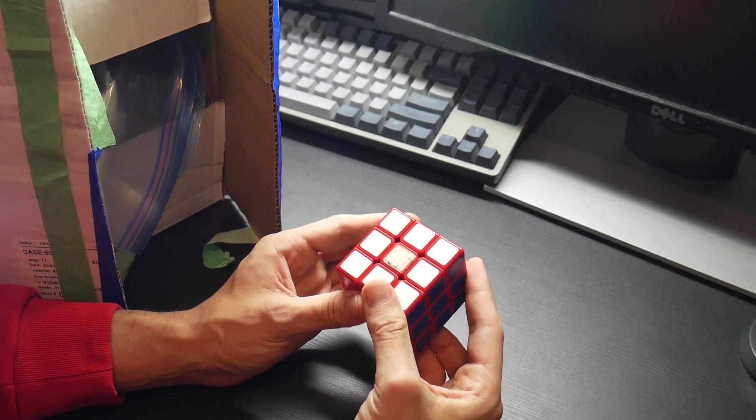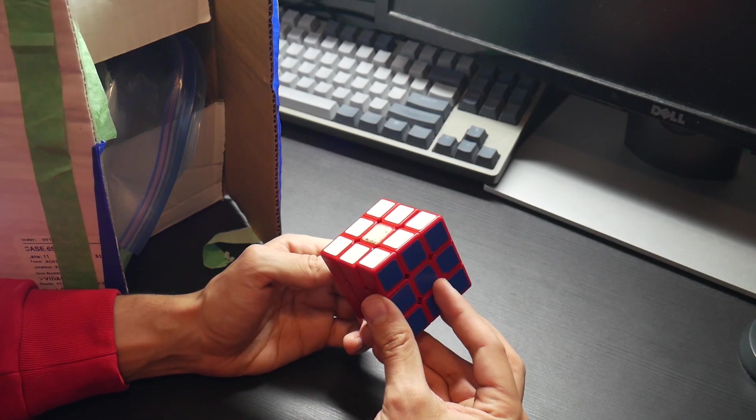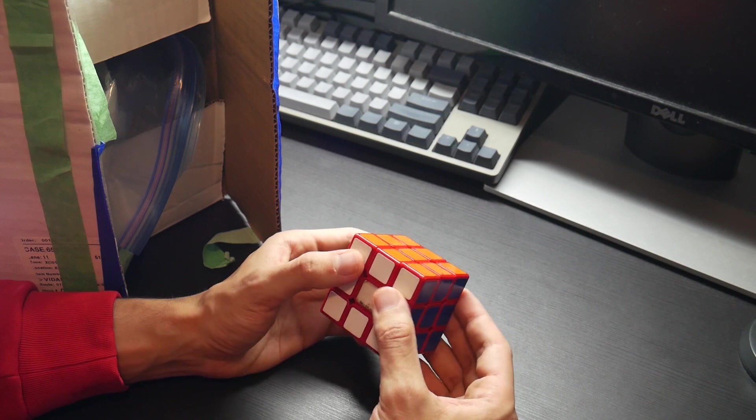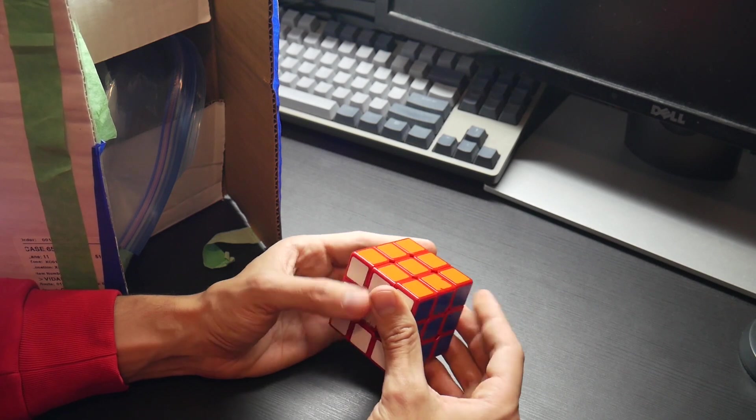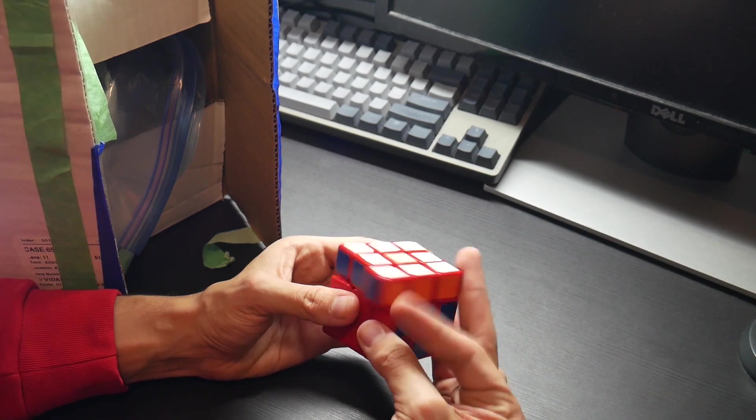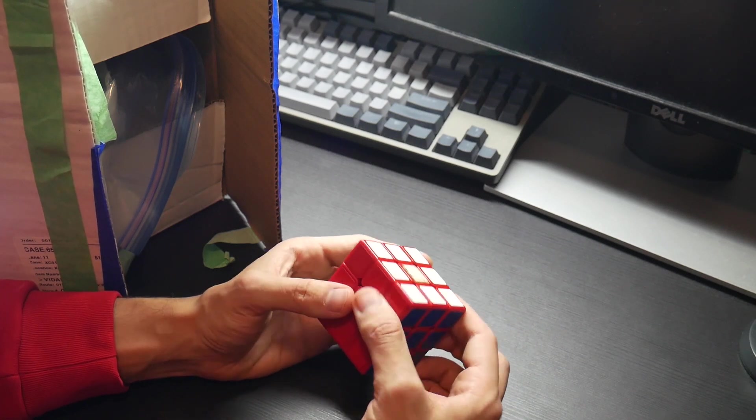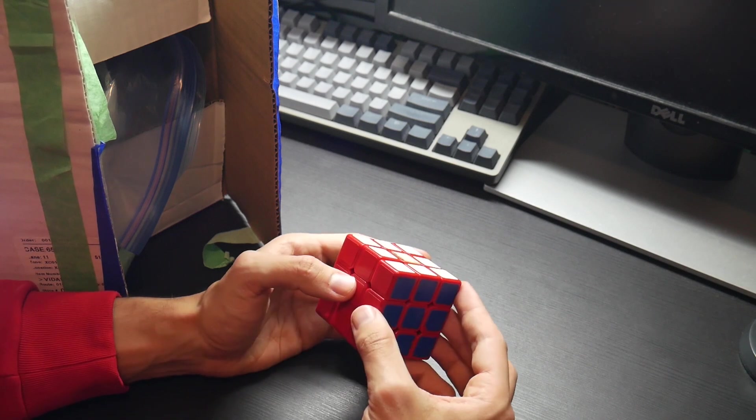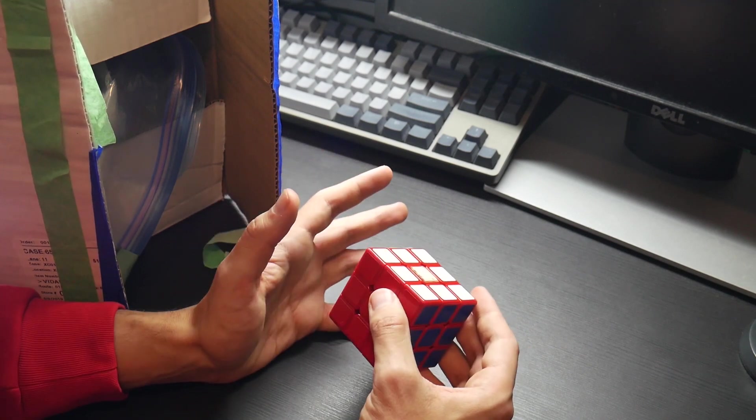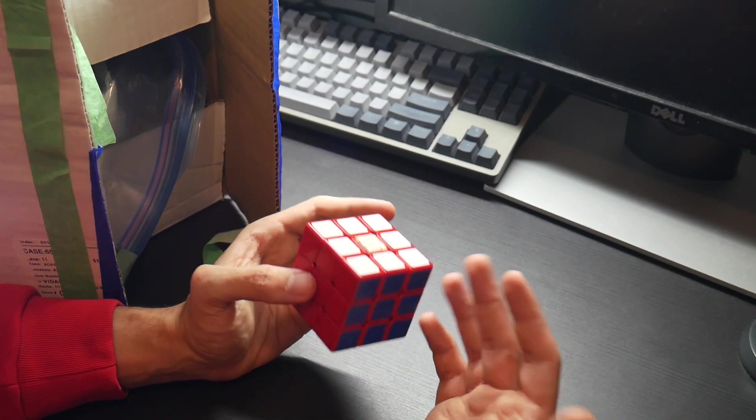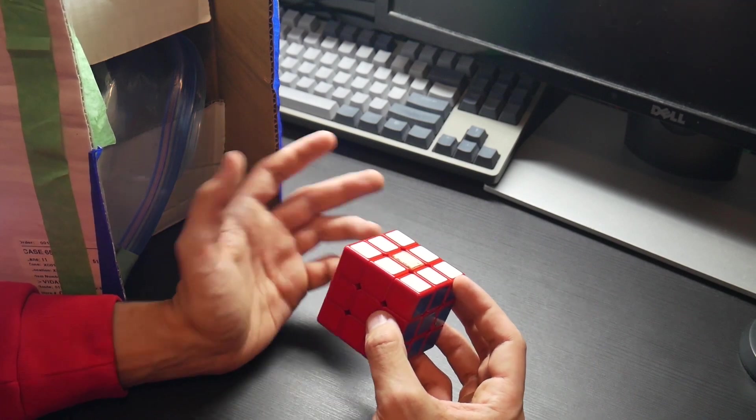Back maybe eight years ago, something like that, stickerless cubes were just starting to kind of become popular. The reason people liked stickerless cubes was because of how they felt. Everyone would pick up a stickerless cube and it felt like it was smoother, like you could turn faster than you could with a black or a white puzzle.